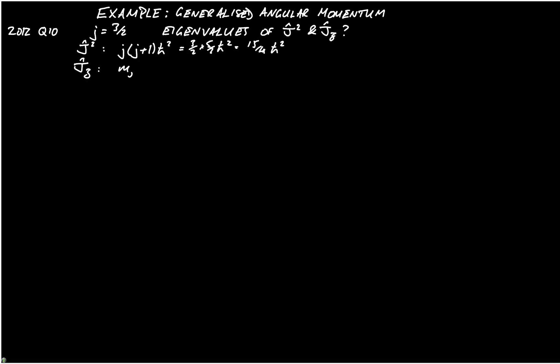And of course this is the same eigenvalue for all of the different eigenvectors of j squared. For jz, then we just have mj h bar. In other words, we have 3 over 2 h bar, 1 half h bar, minus 1 half h bar, and minus 3 halves h bar.